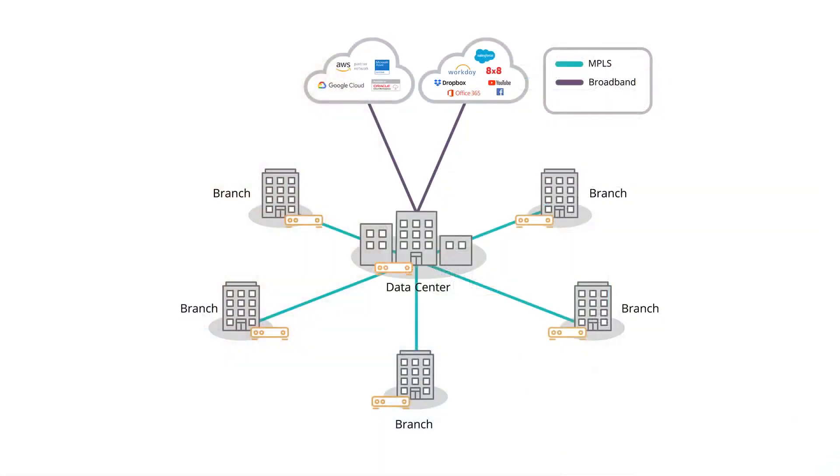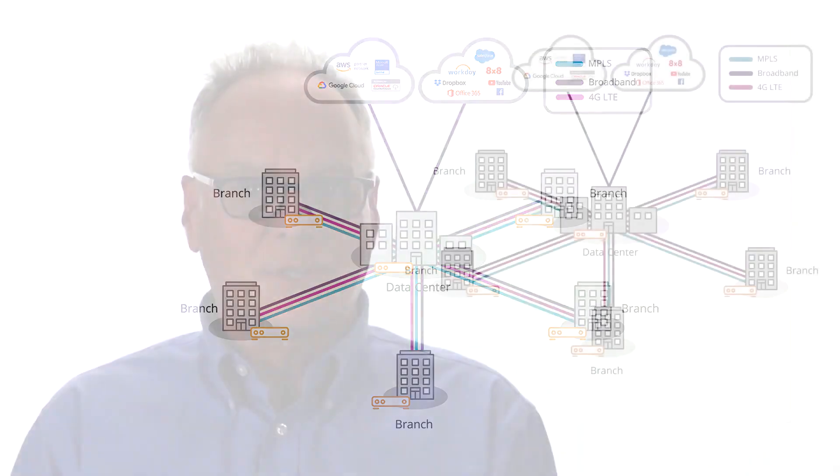An SD-WAN that has the right set of features also enables the ability to actively use the internet as a secure, reliable form of WAN transport. And even 4G LTE can be used in addition to broadband internet and MPLS services.